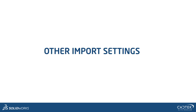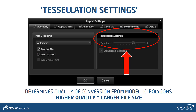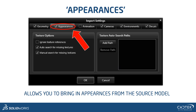Some other import settings worth looking at: we've got the ability to snap geometry to the floor, which is quite important. We've got tessellation settings — the slider bar, the further you go to the right, the higher quality the model will be, but obviously you've got a larger file size to deal with. We've got an Appearances tab to automatically bring in appearances from the model. We've also got the option to ignore texture references if you want to start from a clean slate.